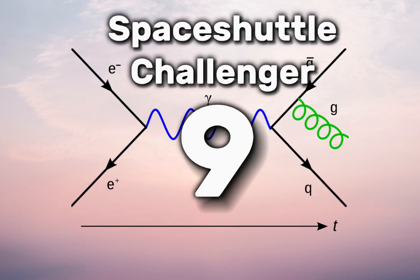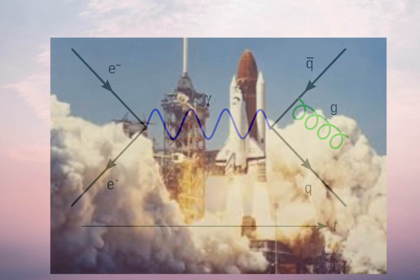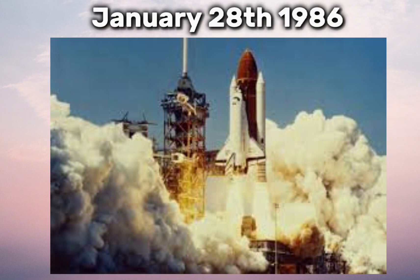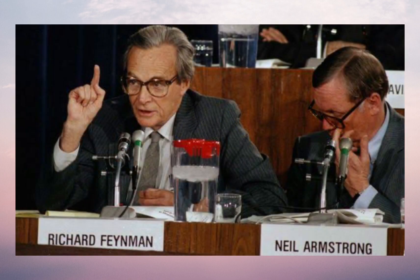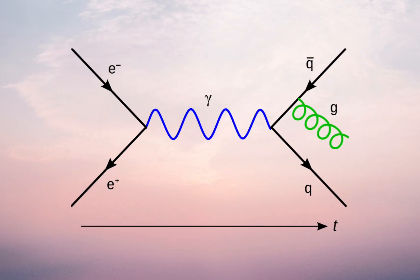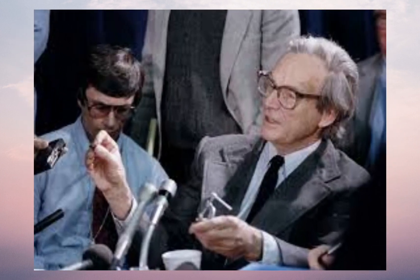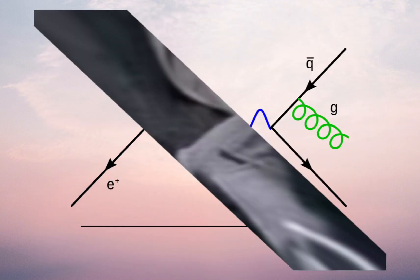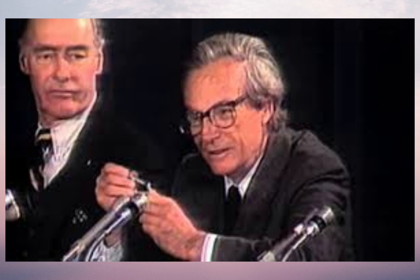9. Space Shuttle Challenger. Feynman played a crucial role in investigating the Space Shuttle Challenger disaster in 1986. Appointed to the Rogers Commission, which aimed to uncover the causes of the tragic explosion, Feynman's meticulous and unconventional approach stood out. In a memorable televised demonstration, he demonstrated how the O-rings, a key component in the shuttle's solid rocket boosters, lost flexibility in cold temperatures by immersing a piece of the O-ring material into a glass of ice water, effectively highlighting a crucial flaw in the shuttle's design.